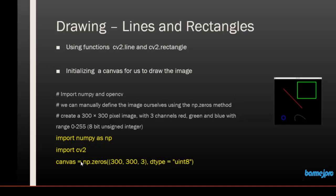np.zeros will generate a canvas with the size of 300 by 300 pixels with three channels — the red, green, and blue channels — with data type as 8-bit unsigned integer. We will create a 300x300 pixel image with three RGB channels, and each channel can hold a value from 0 to 255. So we are creating an array of 300 by 300 pixels where each individual pixel can hold a value of 0 to 255, and within each pixel we have three sub-channels.